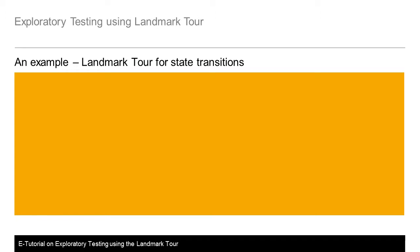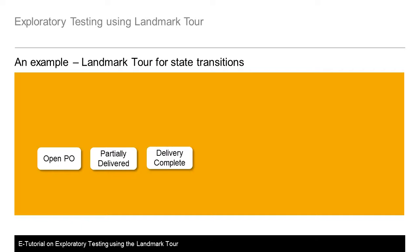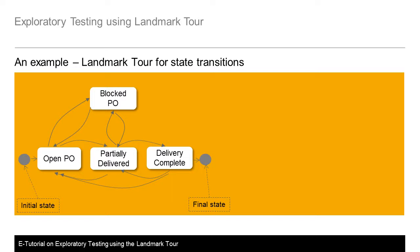Let us look at another example which focuses on using the landmark tour for state transitions. A purchase order, once created and approved, shall initially have the status as open, meaning goods can be received against it. If part of the ordered quantity is received via a goods receipt, the PO item status would be partially delivered — for example, if 10 laptops were ordered and only 6 have been delivered. If the entire ordered quantity is received, the status would be delivery complete. A PO can also be blocked to prevent any further goods receipt against it. A simplified state transition diagram in this case might look like this.